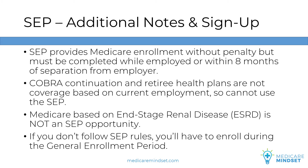Here's an important note about COBRA continuation and retiree health plans, as well as Medicare based on end-stage kidney failure. COBRA continuation and retiree health plans are not considered coverage based on active employment, so you'll want to pick up Medicare Part B within eight months of your separation to avoid a late enrollment penalty and delayed start date. Additionally, Medicare coverage due to end-stage renal disease, or ESRD, is not an SEP opportunity. We strongly recommend accepting both Medicare Part A and Part B when initially eligible for Medicare based on kidney failure.